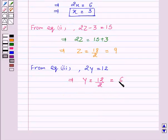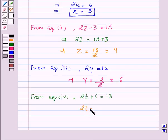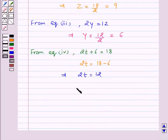And from equation fourth, we have 2t equal to 18-6. This implies 2t equal to 12. This implies t equal to 12 by 2 equal to 6.